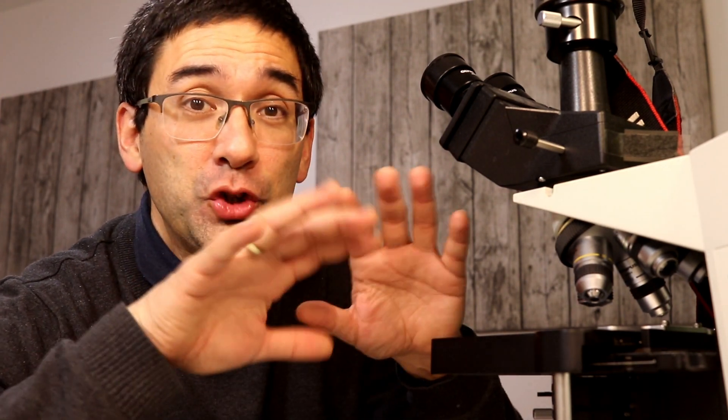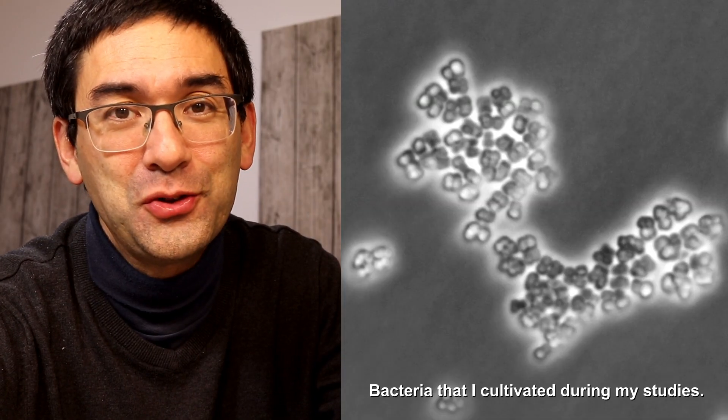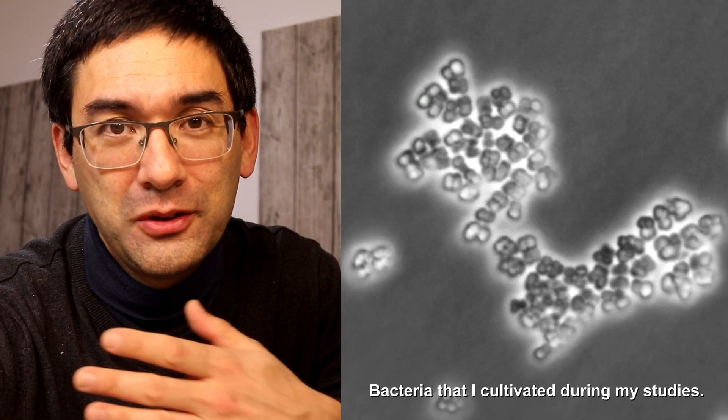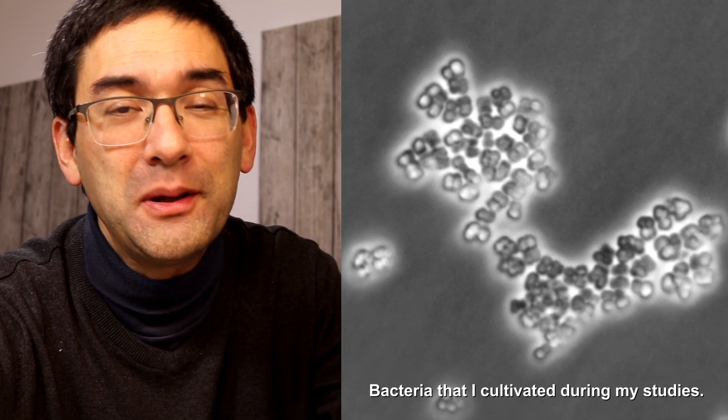If you see different shapes of bacteria in the sample, you know it's not one type anymore — it's probably a mixture; something went wrong and it's contaminated. The second reason is if you want to characterize new bacteria, new strains or new species, you have to document this and describe the shape of the bacteria.